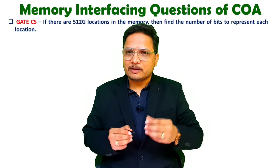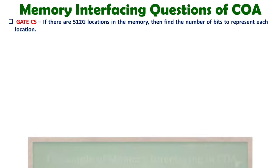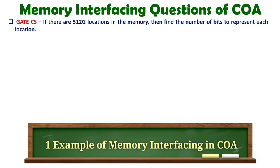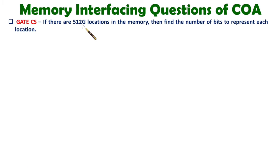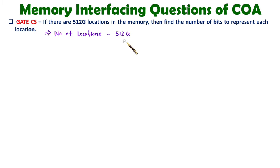Let me explain the first question. If there are 512G number of locations in memory, then find the number of bits required to represent each location. So how many locations are given? 512G. So 512G means: 512 is 2 to the power 9 and G means 2 to the power 30.